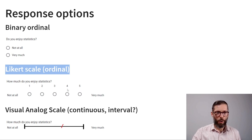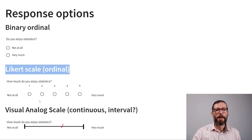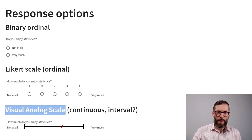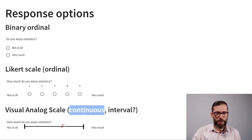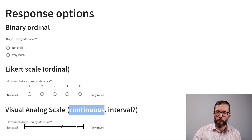This is an ordinal measurement level scale because we have five consecutively ordered response options. Another option is a visual analog scale, which is an attempt at making the scale continuous. Here we ask the same question — how much do you enjoy statistics — with the same labels on the extremes, but participants place a check mark somewhere along a line to indicate how strongly they agree.